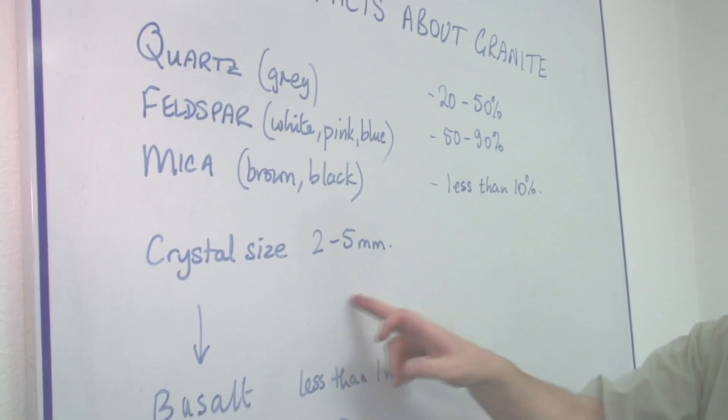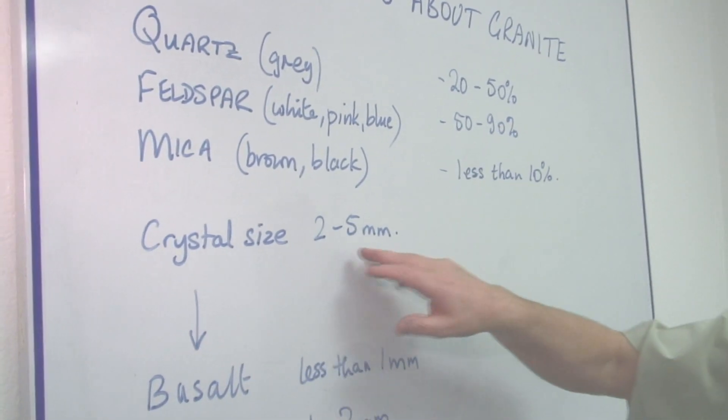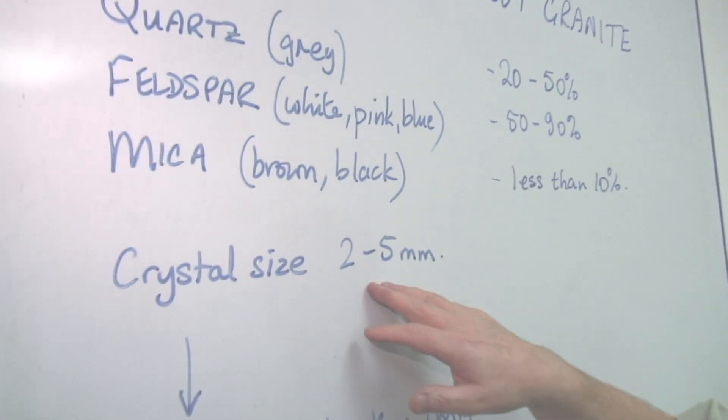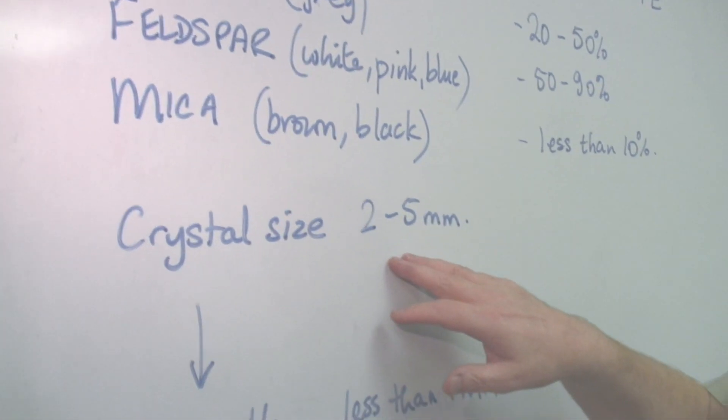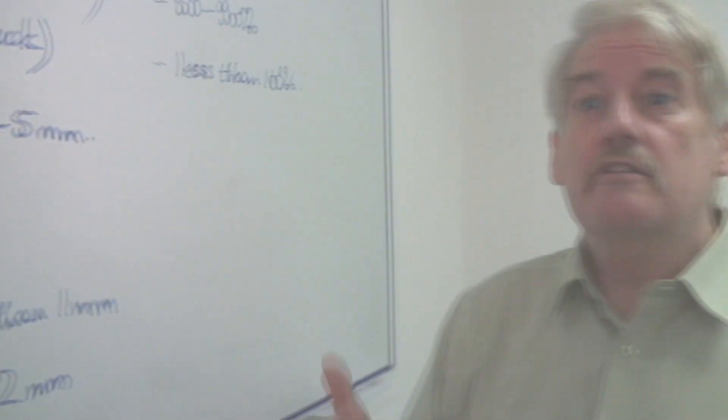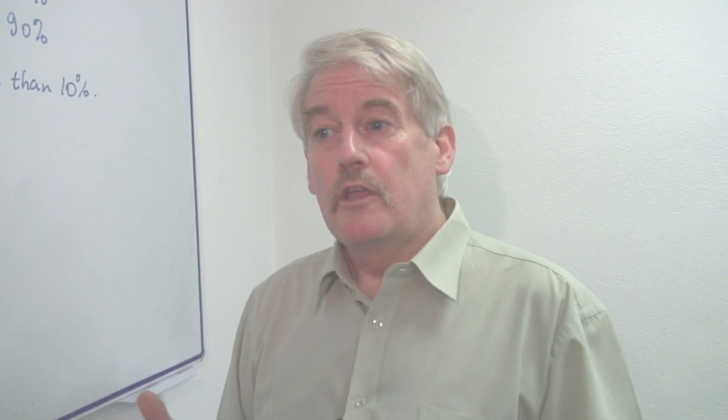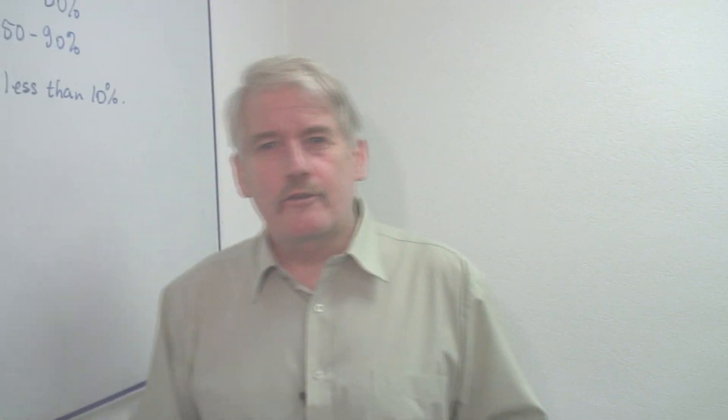The crystal sizes of the granite are between two and five millimeters, quite big, easily big enough to see. So if you look at granite you can see the separate crystals. So if you go to the bank and you'll see that lovely polished granite, you will see the actual crystals of the granite.